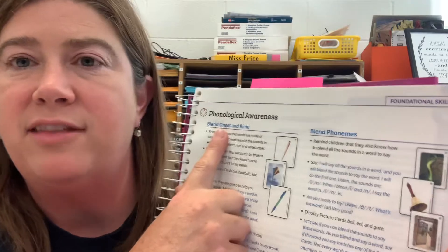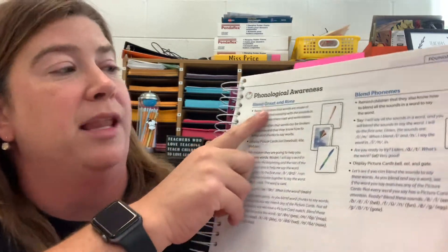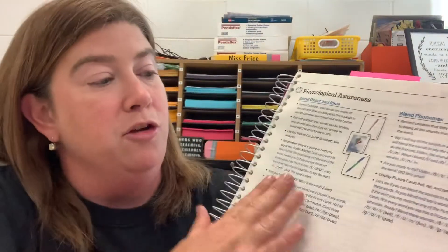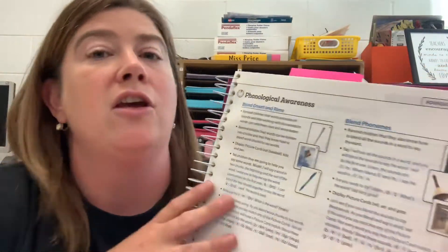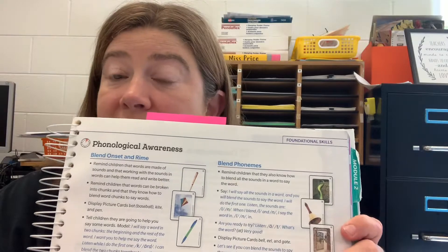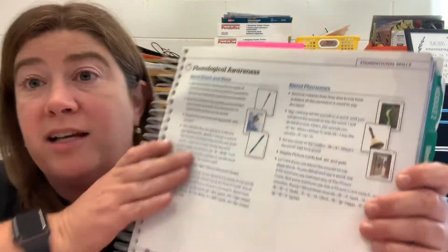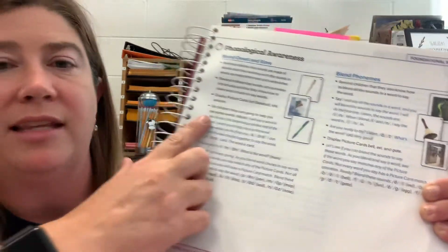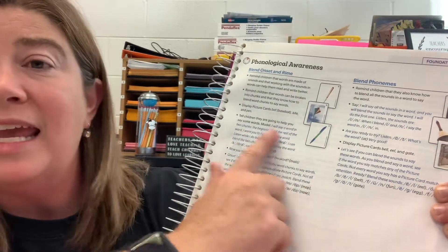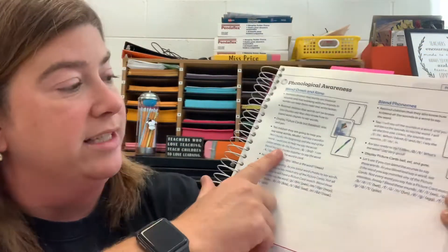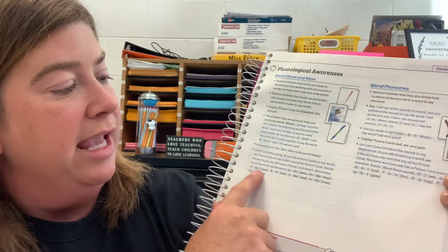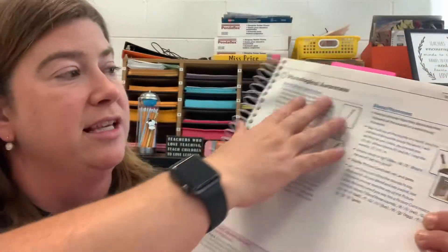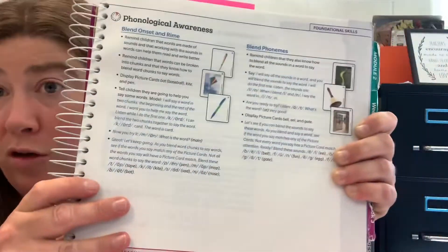Now you can see here this example has two activities. It has blend onset and rhyme, as well as blend phoneme. So based on your time, you may do both of these activities or you may choose to just do one. You do what works best for your classroom. What I really like about the items in the teacher's manual is it tells you exactly what to say — it gives you a script, it has the words to use down here. You just pick this up, you read it, you do it, you're done.